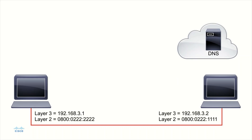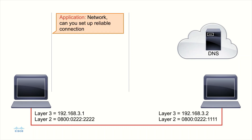In this example, let's assume we have an application running on our computer that wants to send some traffic. The application says, I've got this data put together — maybe it's an email, maybe it's Telnet — whatever the case may be, I have some traffic and I need it to be sent reliably. So the application passes off the data to the application layer of the TCP/IP stack.